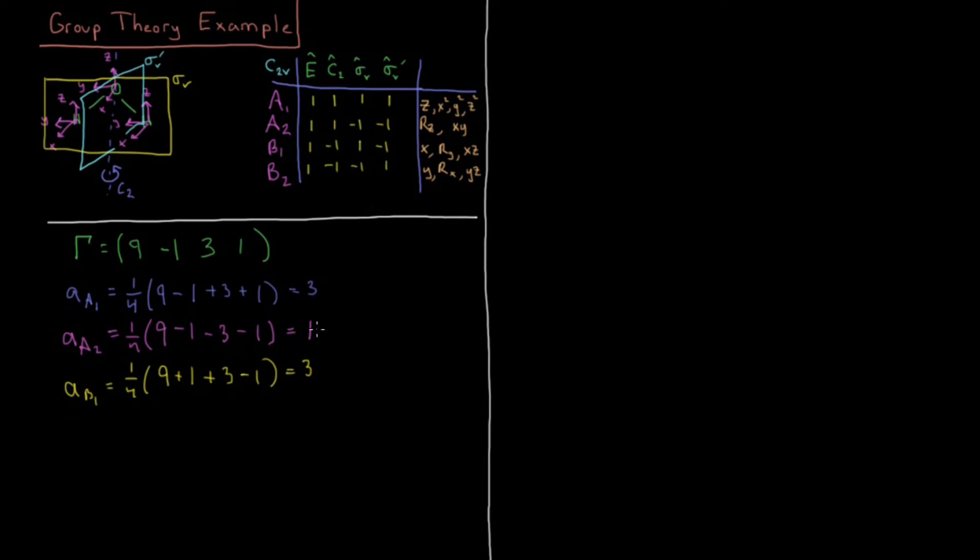Now, by process of elimination, 3 plus 1 plus 3 is 7, so we should find 2 on the last one to add up to 9. Let's see if that's the case.